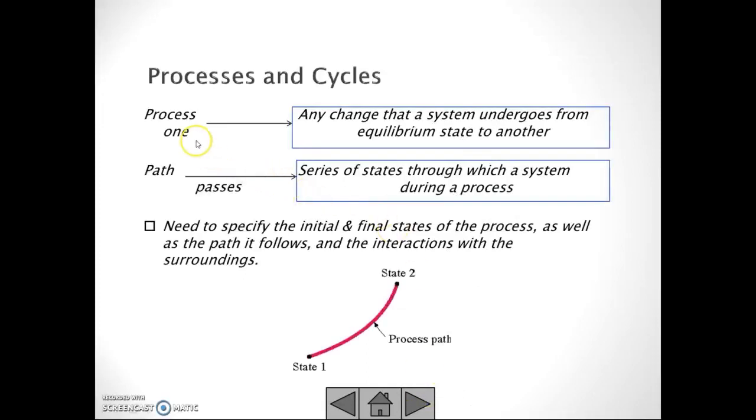Processes and Cycles. A process is any change that a system undergoes from equilibrium state to another. The path is a series of states through which a system passes during a process. Need to specify the initial and final states of the process, as well as the path it follows and the interactions with the surroundings.